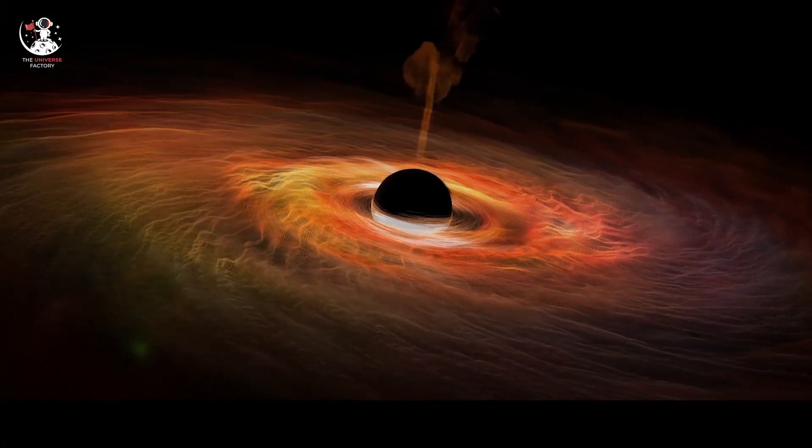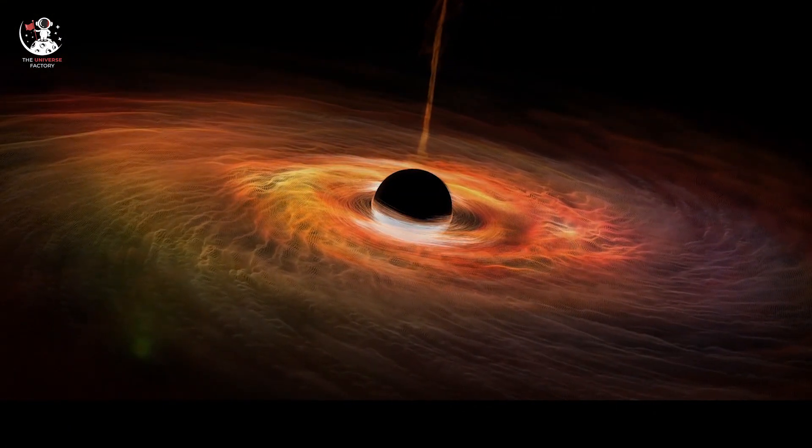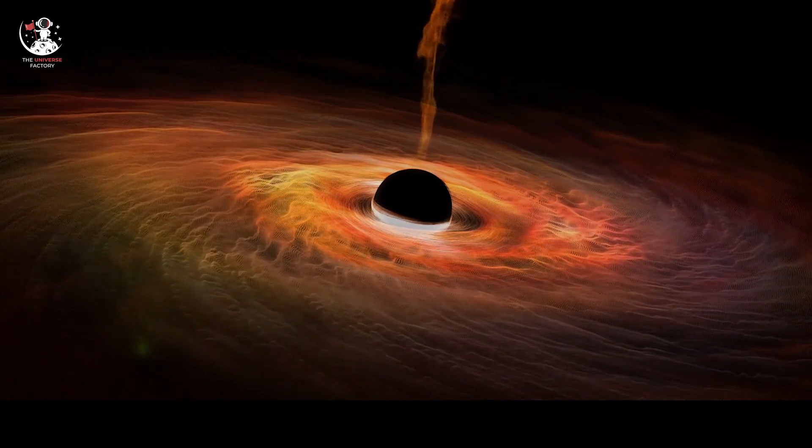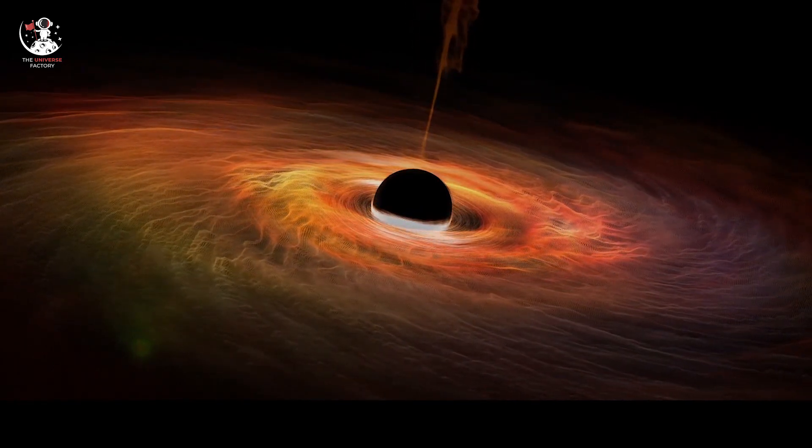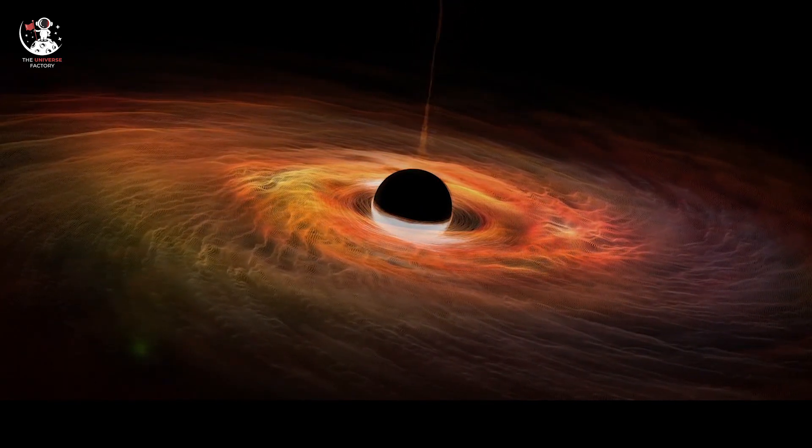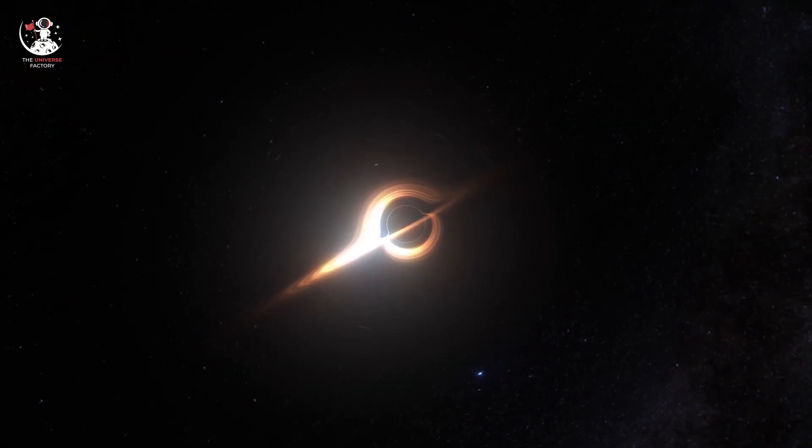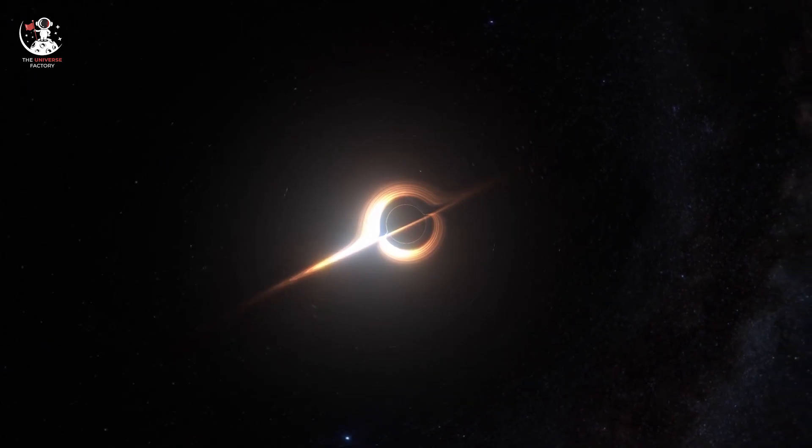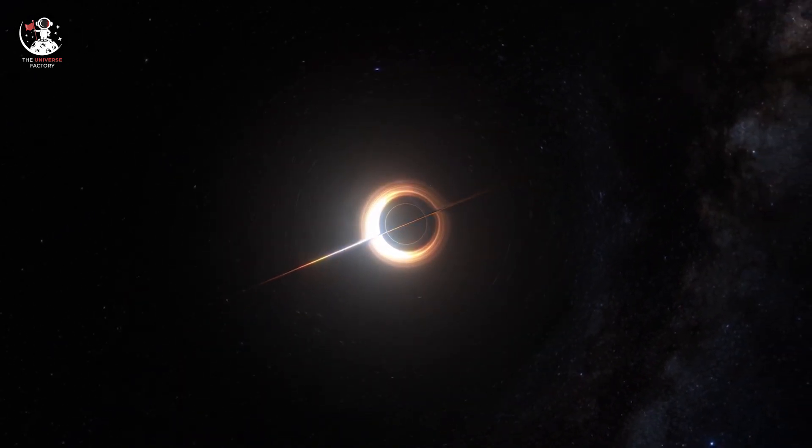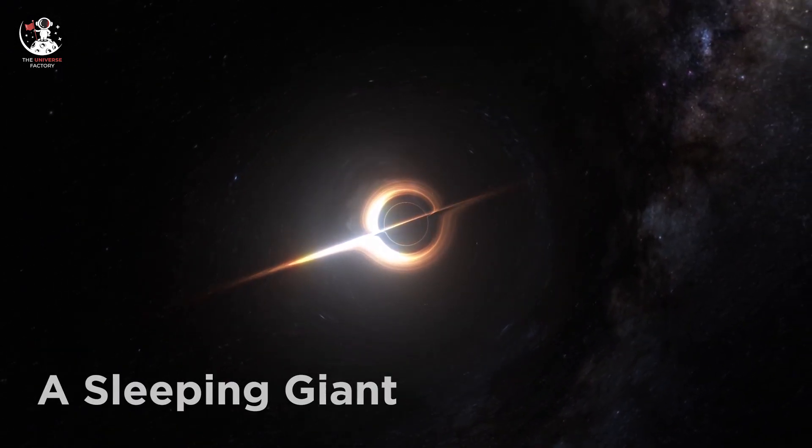Compared to the other supermassive black holes, Sagittarius A-star is relatively not as active. It means it is not consuming much material, leading to weak outbursts of emissions. That is why it displays low luminosity, leading the astronomers to call it a sleeping giant.